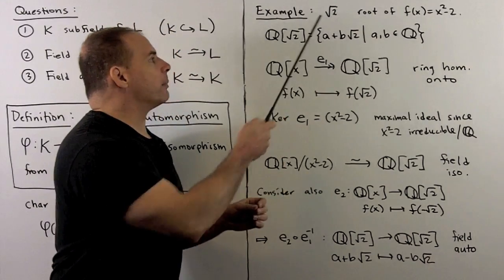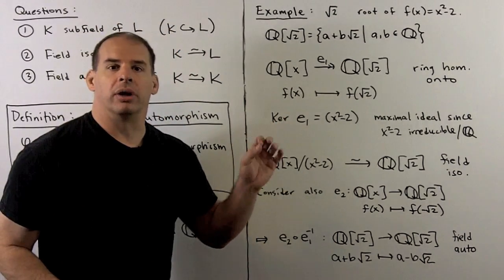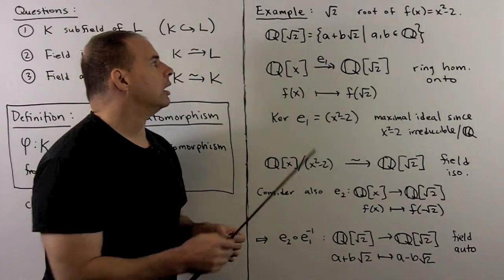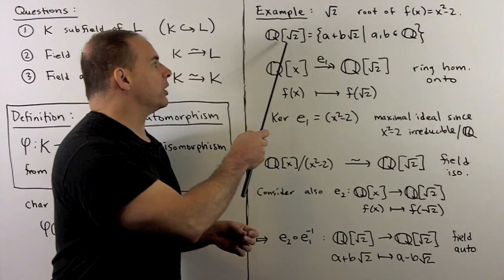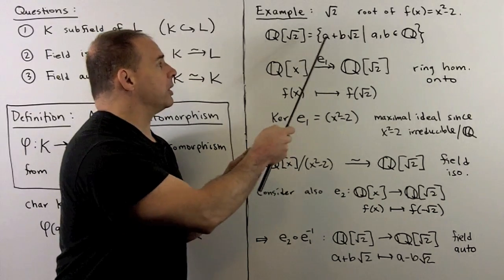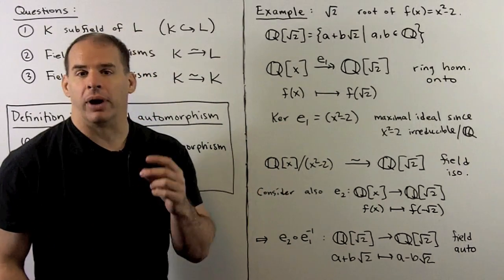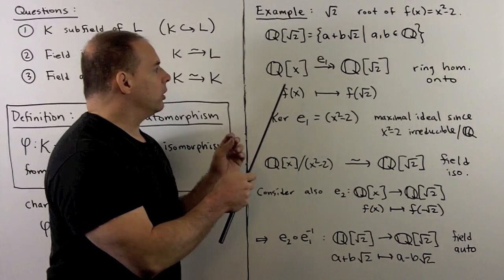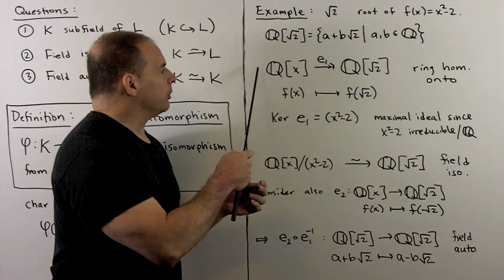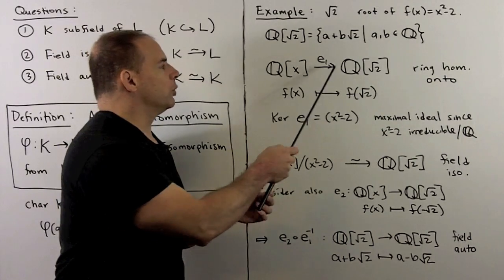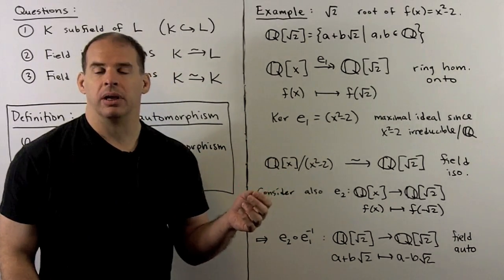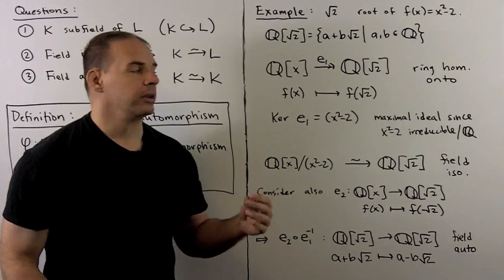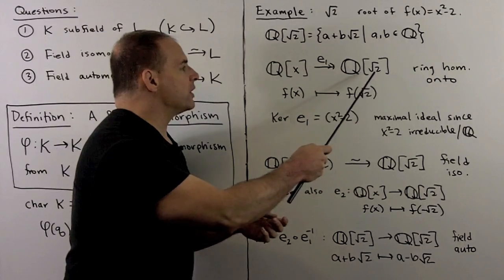Consider the real number square root of 2. This is a root of the polynomial x² − 2 over the rationals. We form the field Q adjoined square root of 2: all real numbers of the form a + b√2, where a and b are rational. To formalize, we have a map from polynomials over Q to Q(√2) given by evaluation — sending f(x) to f(√2). This is a ring homomorphism and it's onto.